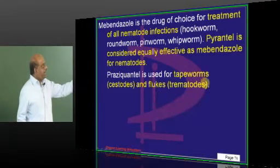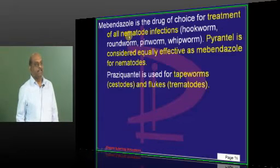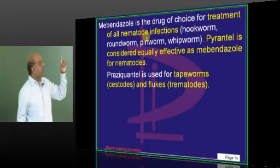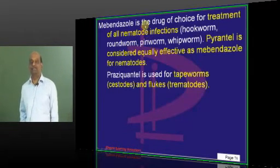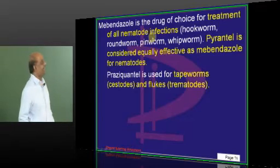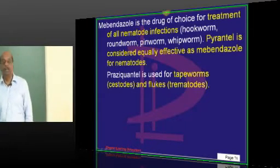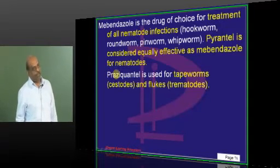And nematodes. First, nematodes are what? Tapeworms are what? Cestodes. I mean, cestodes, trematodes and nematodes. Fundamental zoology. Nematodes are hookworm, roundworm, pinworm, whipworm, not the tapeworm. You need to be sure. For the tapeworms and the flukes, it is the praziquantel is what you need to remember.